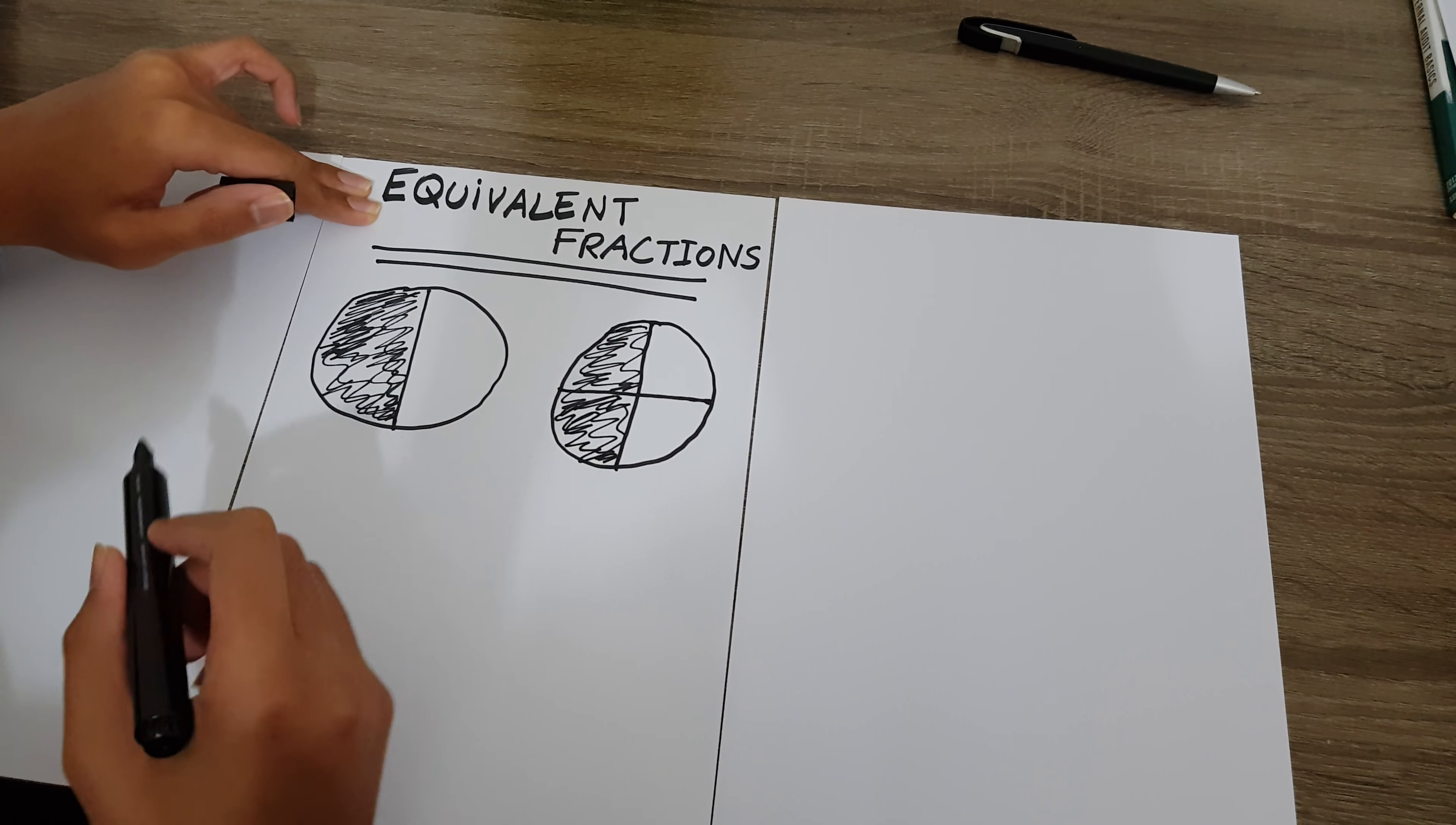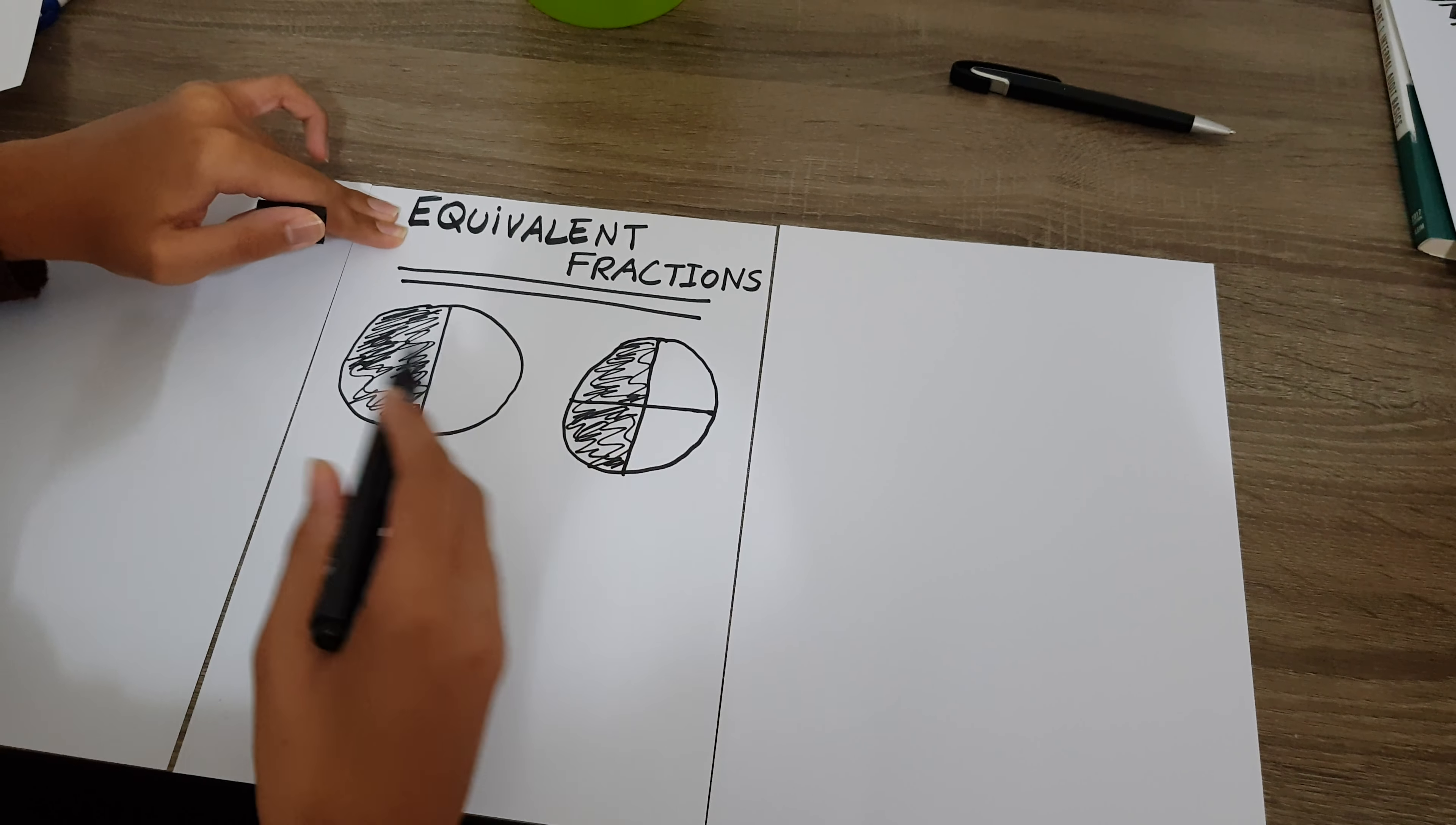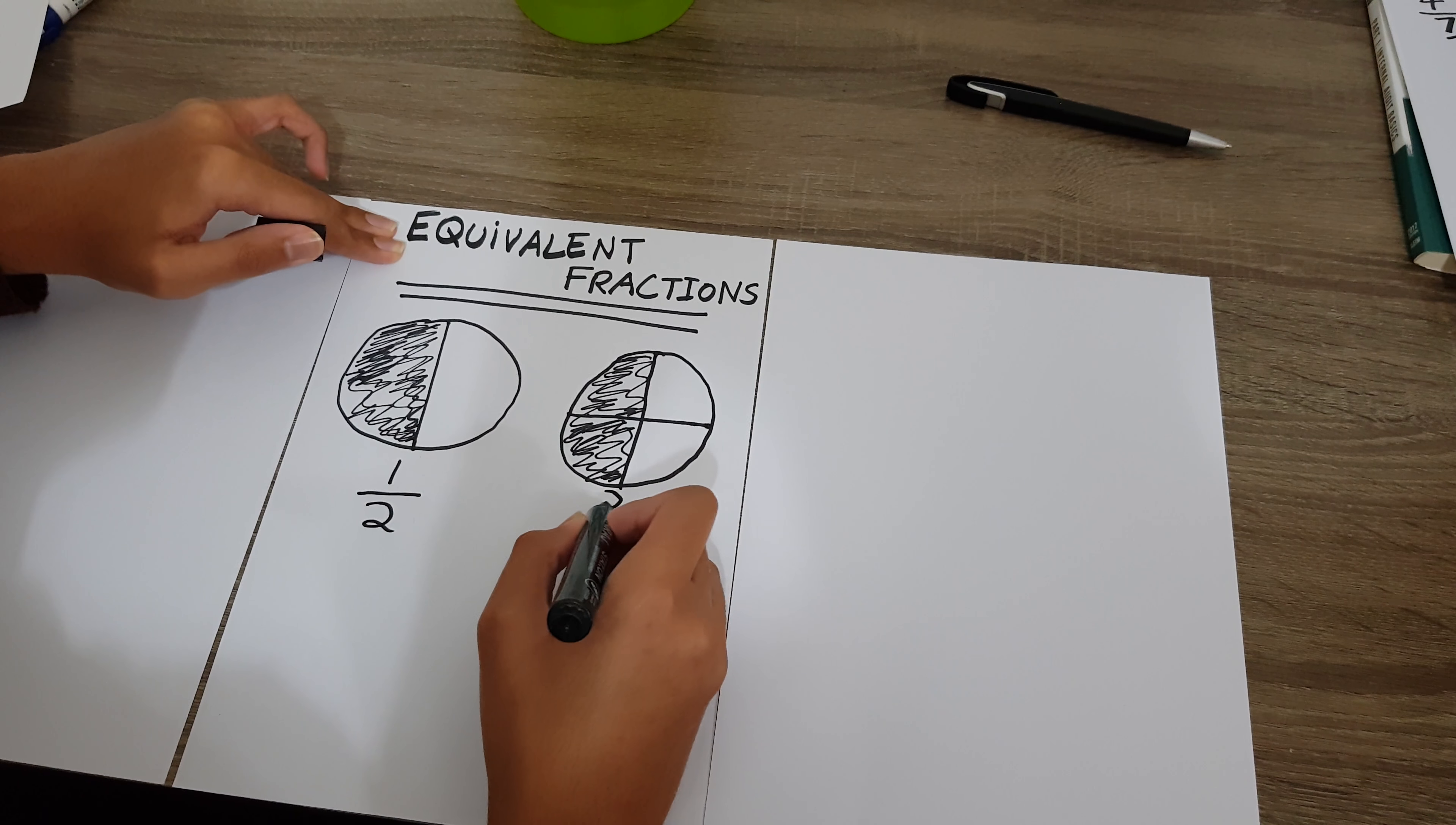So, do you think you ate the same amount or was it different? Well, if the circles are the same size, you actually ate the same amount because this is one over two and this is two over four.